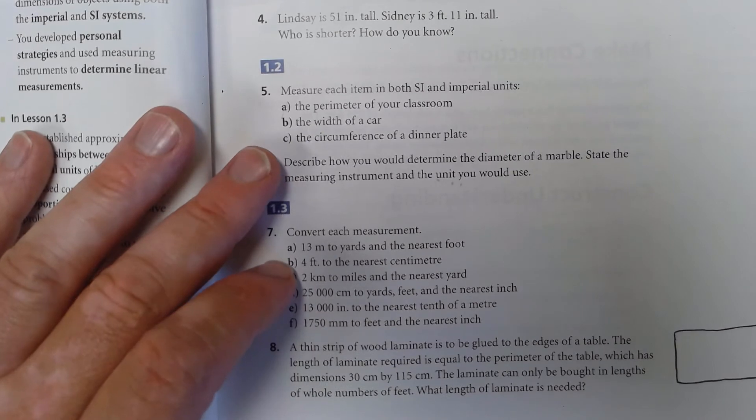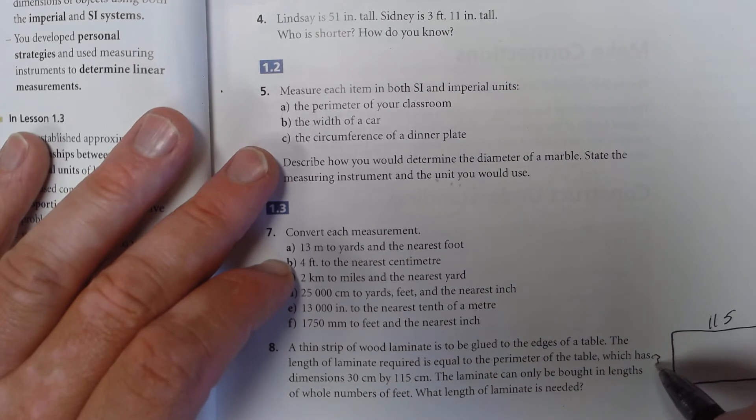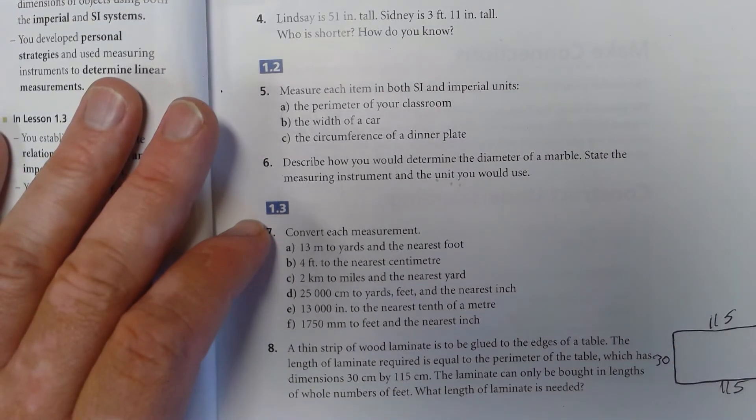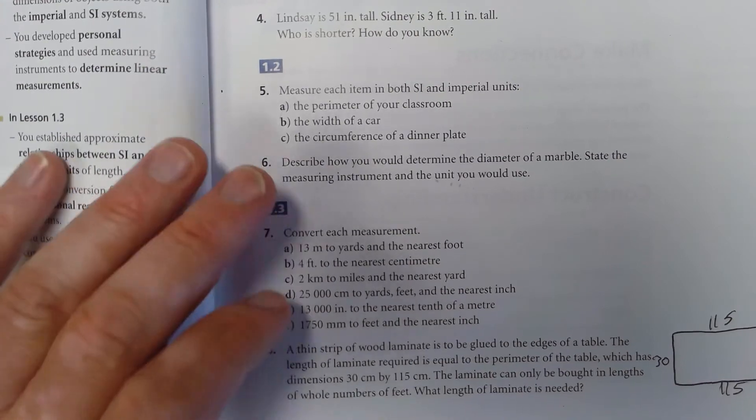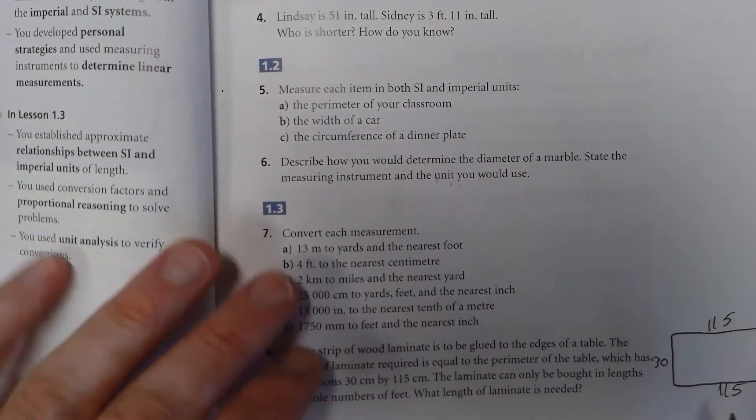Allow me to make a sketch first. So you've got your table. The long side is 115, the short side is 30, but this is the perimeter. So there's a 30 here and 115 here. So add up all these numbers - that's going to be the amount of laminate in centimeters.